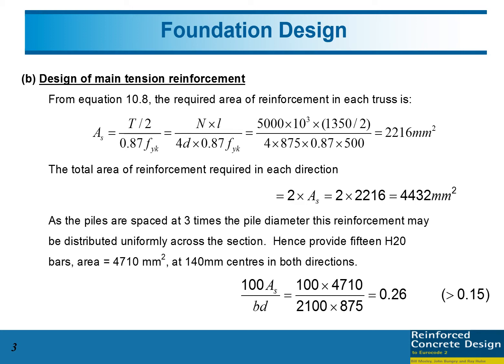Now we have four piles, so we need to multiply this value by 2, so that's 4432 square mm to support each direction. As the piles are spaced at three times the pile diameter, this reinforcement may be distributed uniformly across the section.